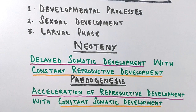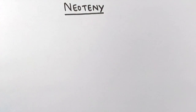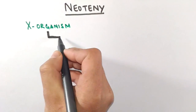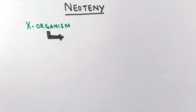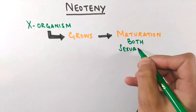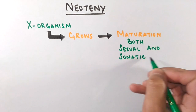Both processes are different, but they lead to the same result: larval reproduction. Now let's discuss neoteny in detail and the mechanism behind it. Let's illustrate neoteny with an example organism. When this organism is young, it has certain traits that are lost as it grows. Eventually, after maturation, the organism develops all adult traits — both somatic development and sexual development occur.